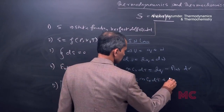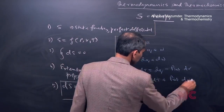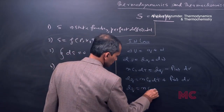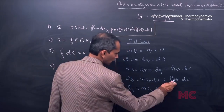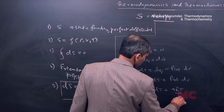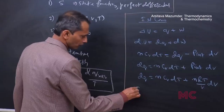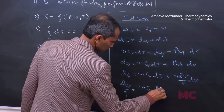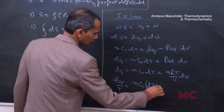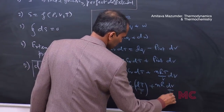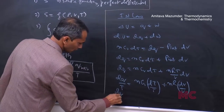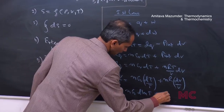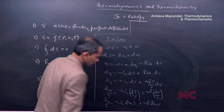Since we consider the gas to be ideal, dQ equals nCᵥdT plus (nRT/V)dV. If you divide the dQ term by T, you get nCᵥ(dT/T) plus nR(dV/V), which is nCᵥ d(lnT) plus nR d(lnV). So dQ/T equals nCᵥ d(lnT) plus nR d(lnV).